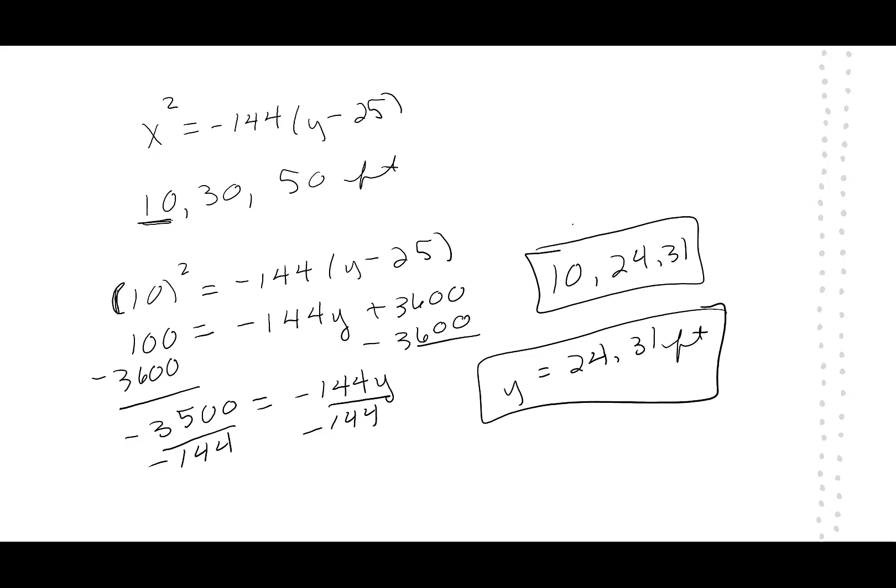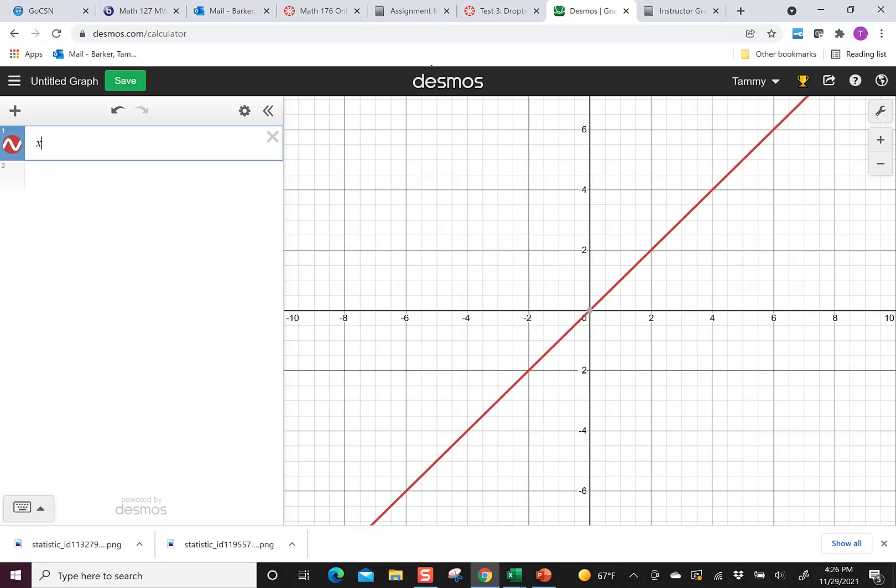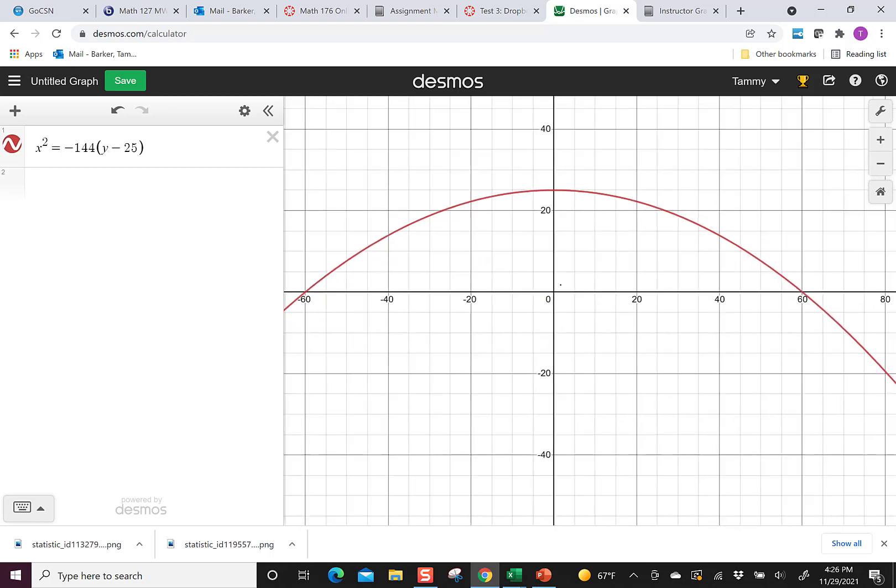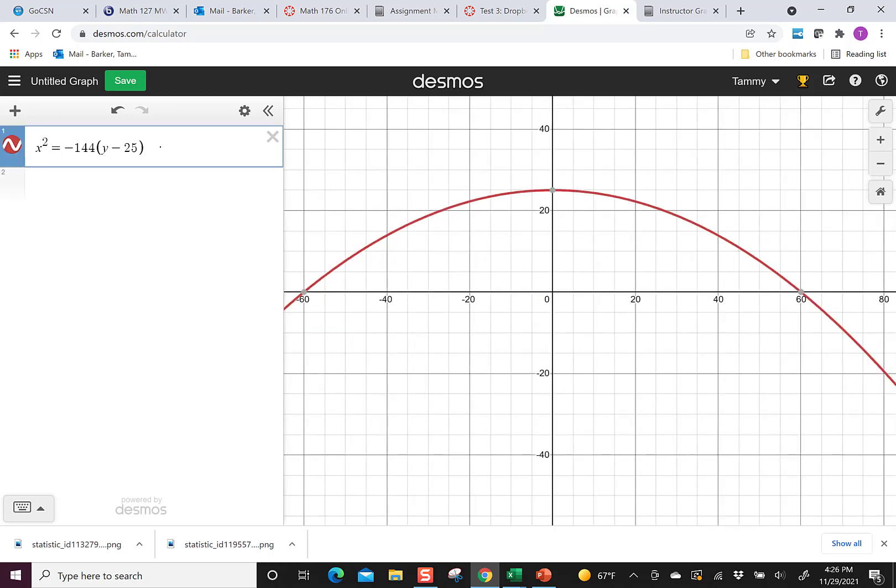What I want to show you is let's not do all this work. Let's have Desmos help us out. In Desmos, I start with x squared equals, I have negative 144, and I'm going to put in y minus 25. So this is my problem. You could zoom in a lot and now I can see it. If I want to make it look pretty, I could tell it negative 60 is less than or equal to x, which is less than or equal to 60. And then it has the beginning and end that really looks more like a bridge.